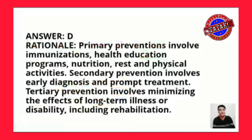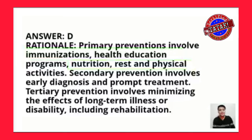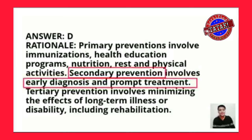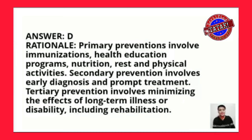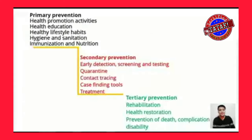Primary level of prevention involves immunization, health education, nutrition, rest, and physical activities. Secondary prevention involves early diagnosis and prompt treatment of disease. Tertiary prevention involves minimizing the effects of long-term illness or disability, including rehabilitation. Primary prevention means no disease yet — health promotion activities. Secondary prevention is diagnosing or treating the disease. Tertiary prevention is for rehabilitation. Under primary prevention: health promotion activities, health education, healthy lifestyle habits like rest, sleep, hygiene and sanitation, immunization, and nutrition.